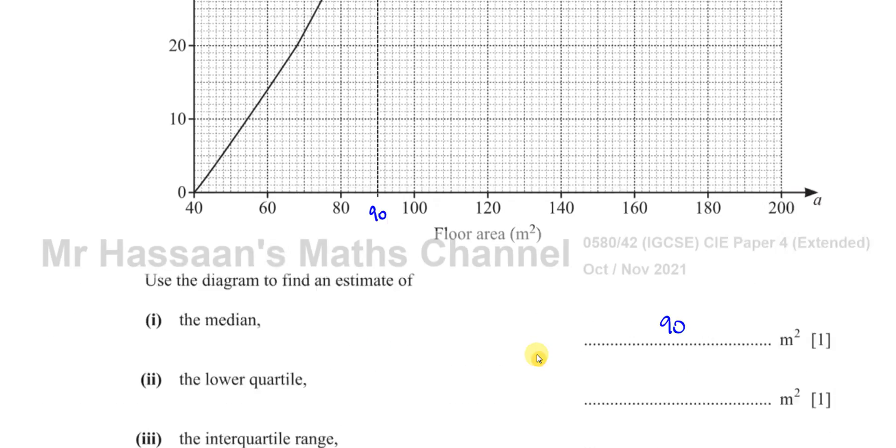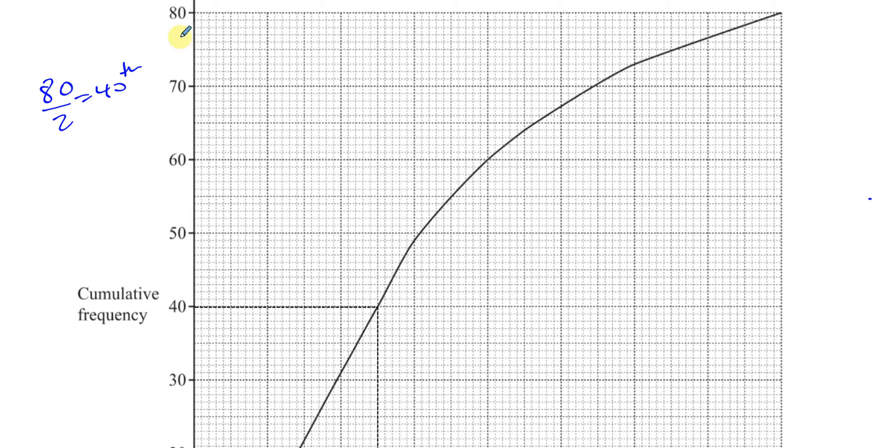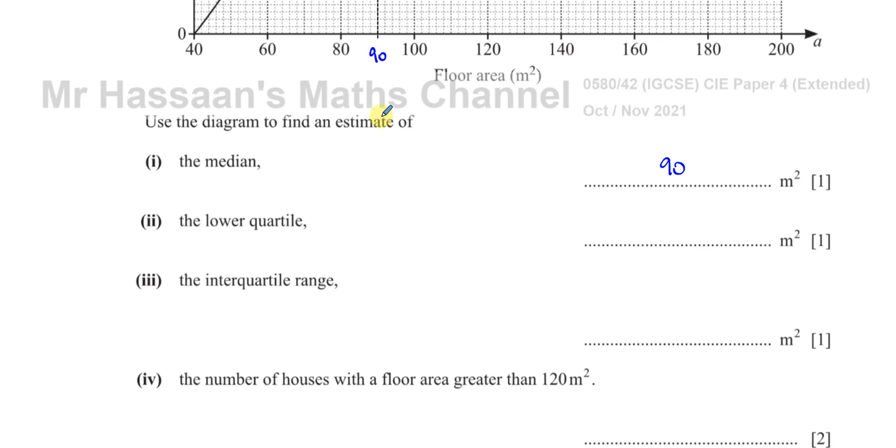Now we've got to find the lower quartile. The lower quartile is basically when you take the number of entries, which is 80, and you multiply them by a quarter. So it's a quarter times 80. The median is 80 divided by 2, which is the 40th position. The lower quartile is given the symbol Q1, and it's basically a quarter of the way up. So it's a quarter of 80, which is 20. So it's the 20th position.